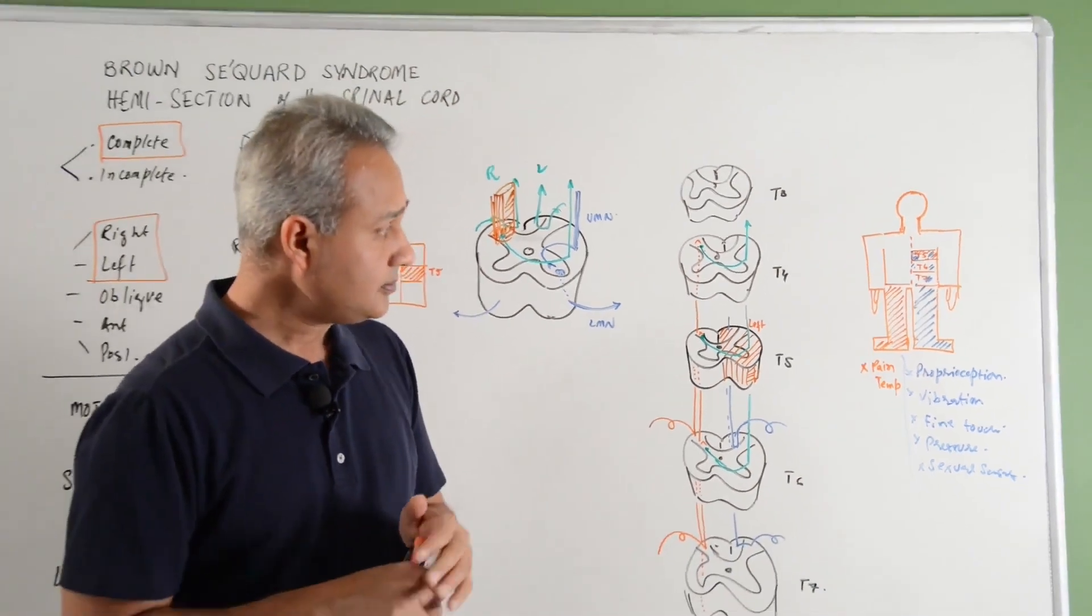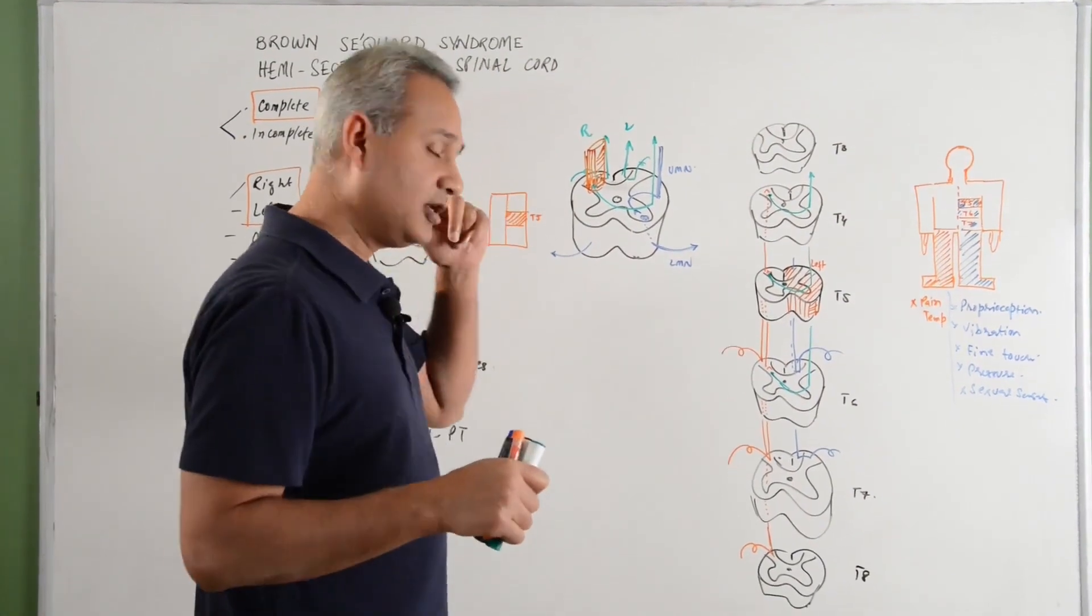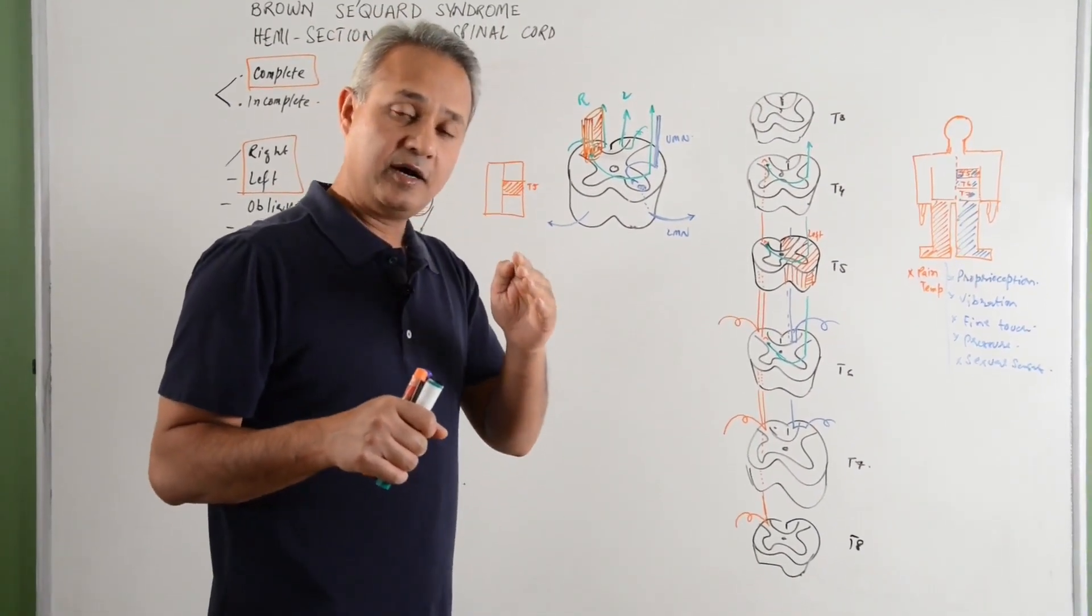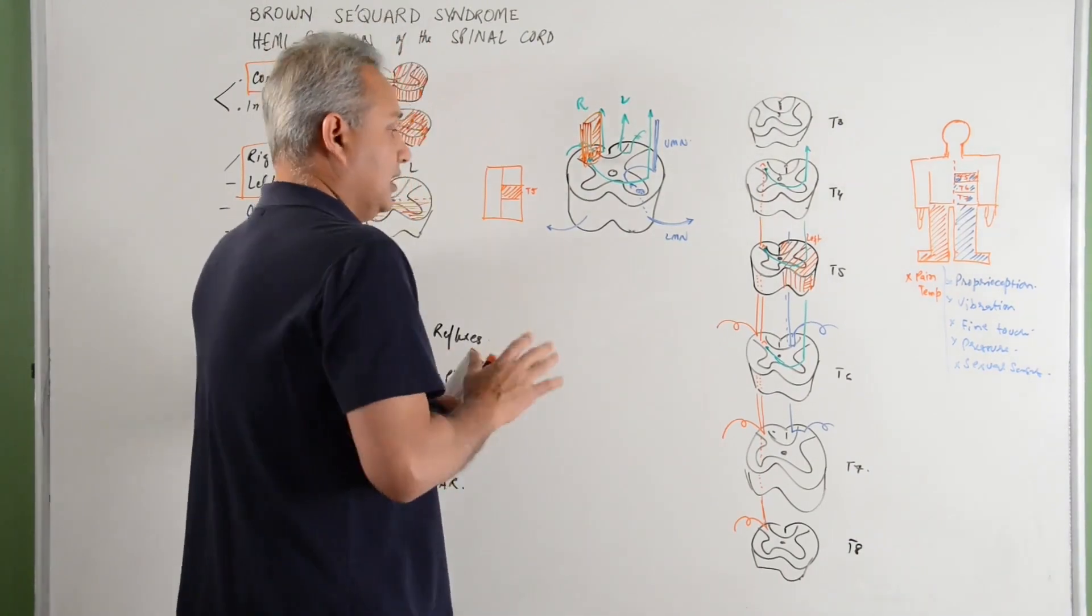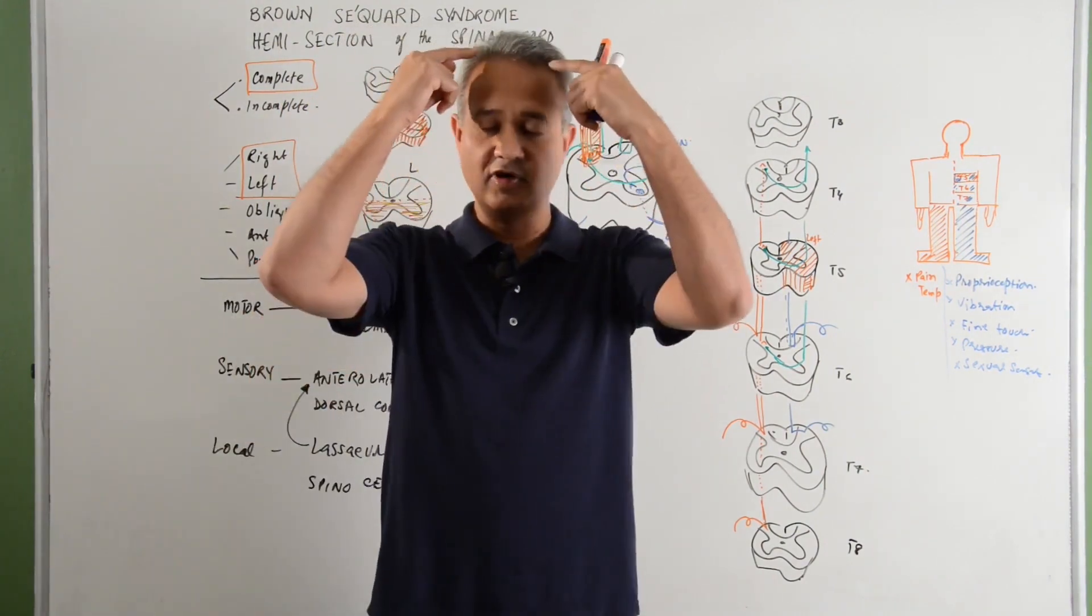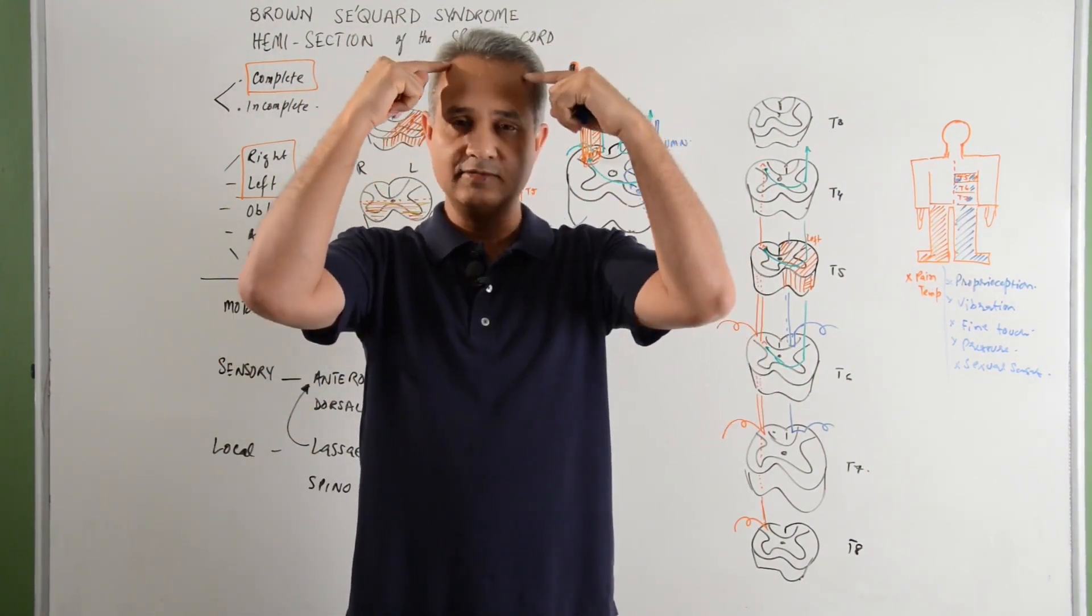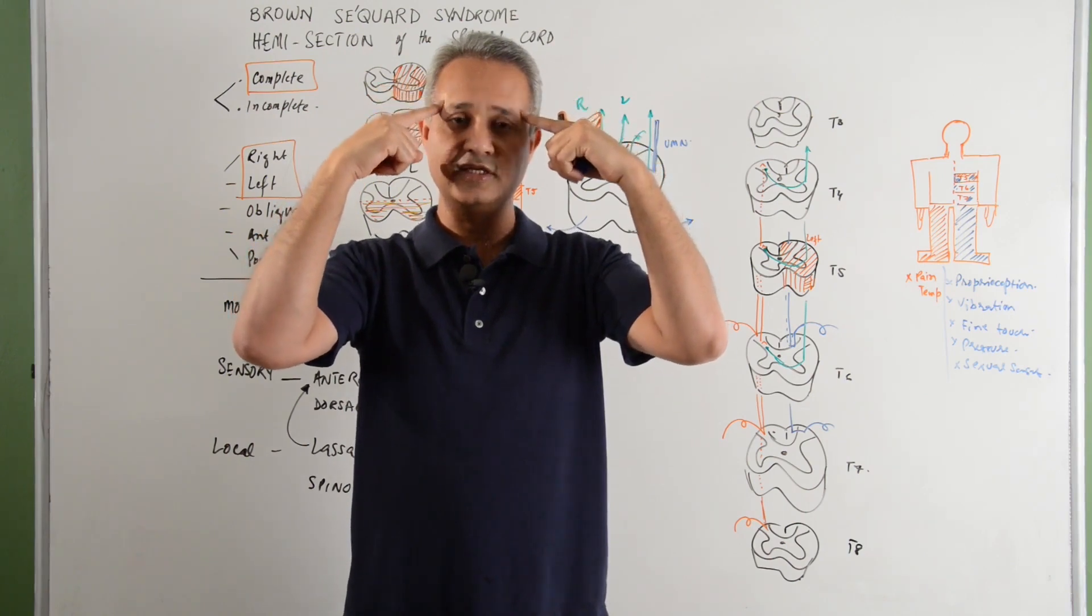Let us talk about the motor system. What you have to keep in mind is the upper motor neuron and lower motor neuron. The motor system is very simple. The corticospinal tract comes from the cortex, passes through the corona radiata, then the internal capsule.